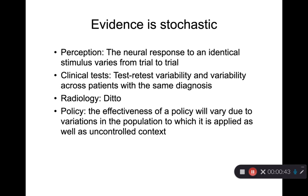Evidence is also stochastic — it's random. A visual stimulus will get neurons to respond, but if I show the same exact stimulus again, the response might be a little bit bigger or a little bit smaller. Similarly, a swab test for COVID can give a stronger or weaker response on a repeat for the same patient, and will certainly vary across multiple patients that have the same disease. The same goes with the clarity of a smudge on an MRI scan or x-ray, and with the effectiveness of a test of a policy on a small population.